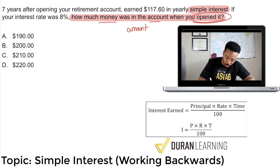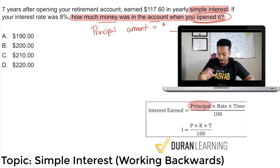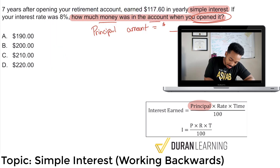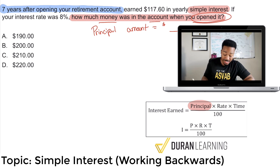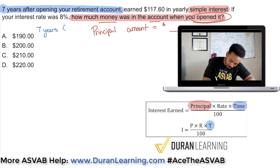We're looking for your opening amount, which is also called your principal amount — that is what we're looking for. I'm going to write equals, blank — don't know what it is yet. I'm going to collect my information, set up my equation, and solve it. It's going to be that simple, but you just have to know what belongs where. So in blue: seven years after opening your retirement account — seven years, that is time, that is the term of your account. Time equals seven years.